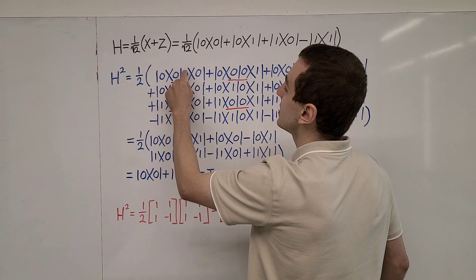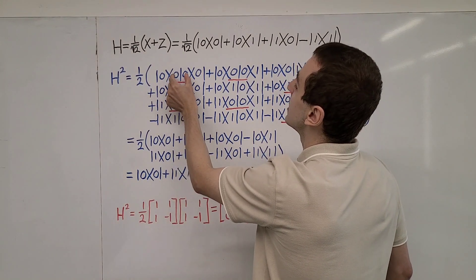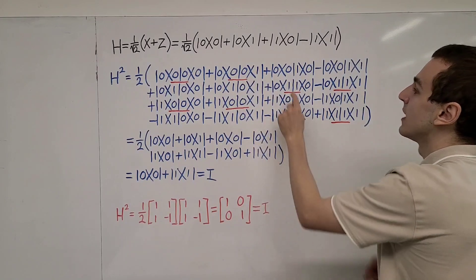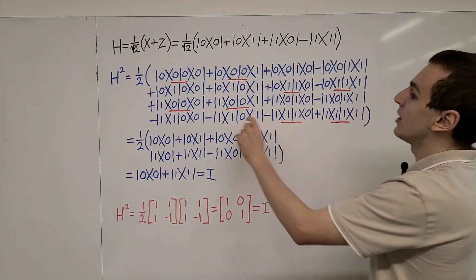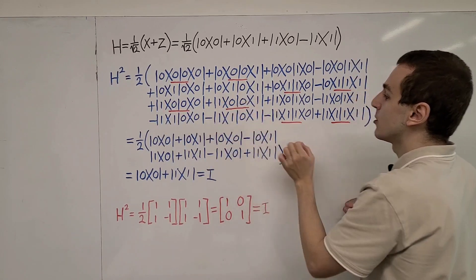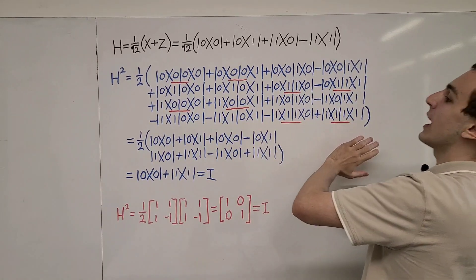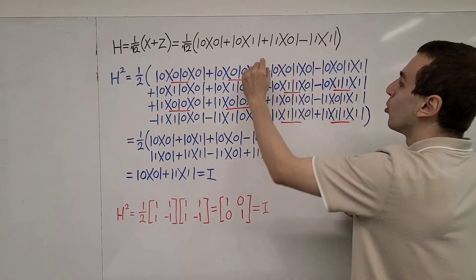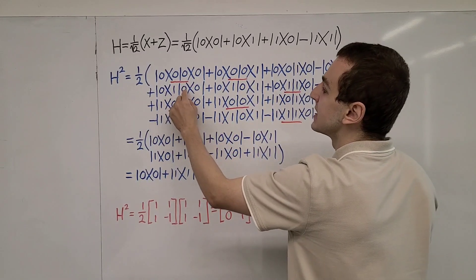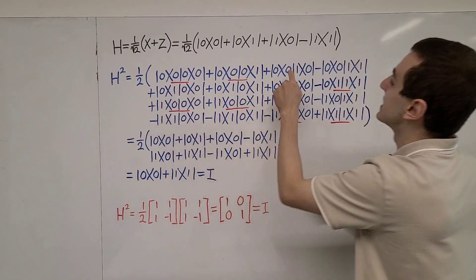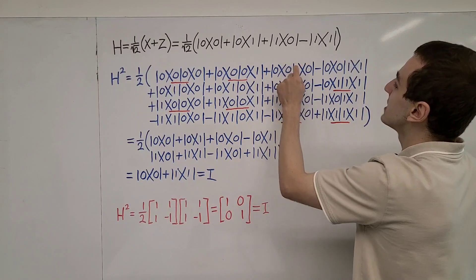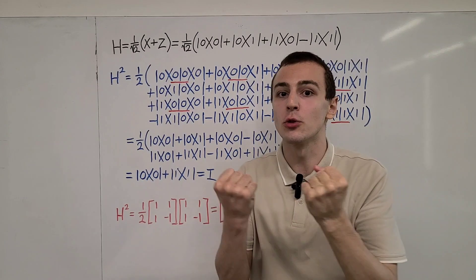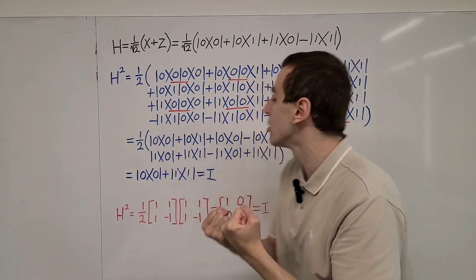We're going to get zero if the states are different, and one if it's the same state. So in this case we have ⟨0|0⟩ — that's the same state, which evaluates to one. That happens here as well: ⟨0|0⟩, same state. It happens with ⟨1|1⟩ and ⟨1|1⟩. And over here we have ⟨0|0⟩, ⟨0|0⟩, ⟨1|1⟩, and ⟨1|1⟩. So in total there are eight combinations which give a non-zero answer. All other combinations have either ⟨1|0⟩ or ⟨0|1⟩, which evaluate to zero because those two computational basis states are orthogonal to each other.